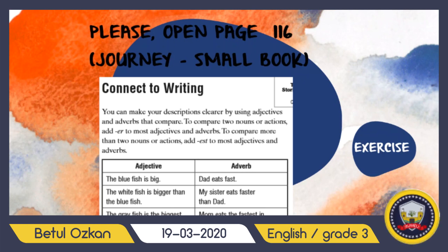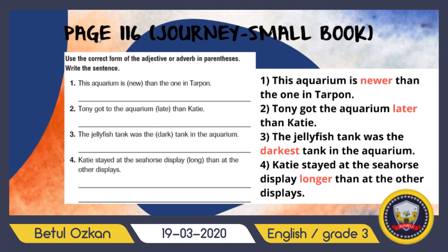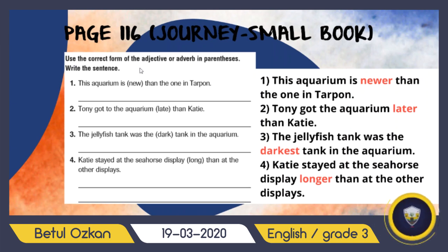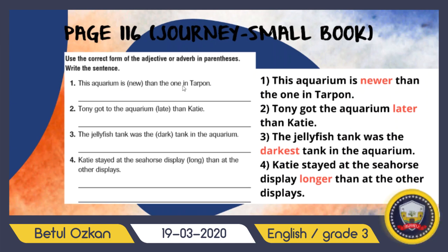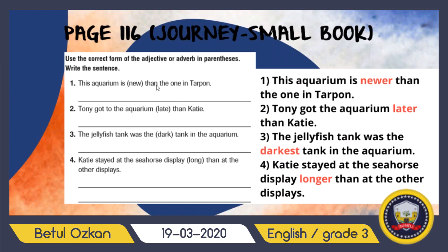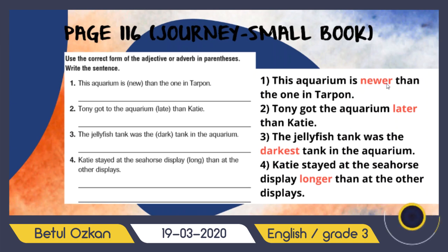If you are ready, let's move to the exercise on page 116 from your Journey small book. First sentence: 'This aquarium is ___ than the one in Tarpon.' The word 'new' is given and I can see 'than,' so I compare two aquariums and add -er. The answer is 'newer.' This aquarium is newer than the one in Tarpon.